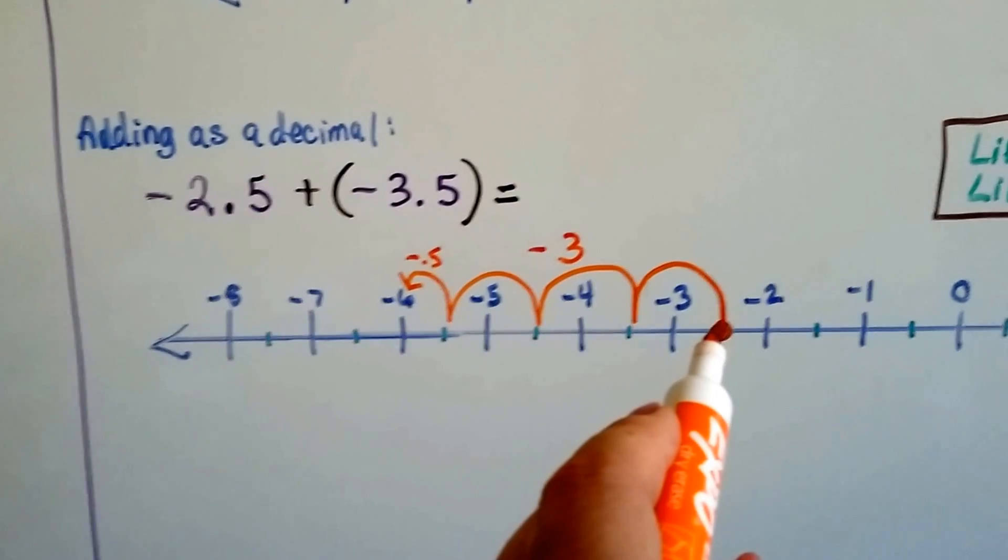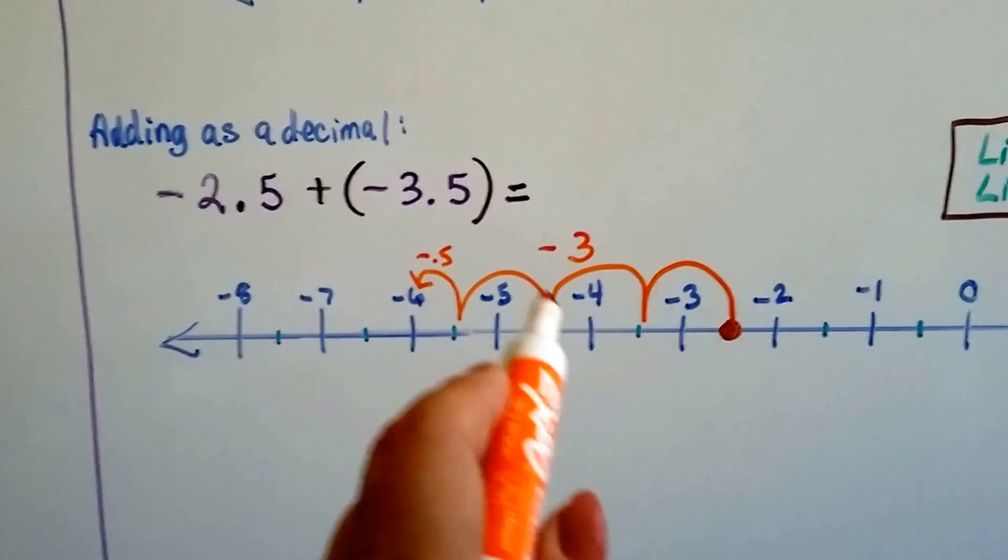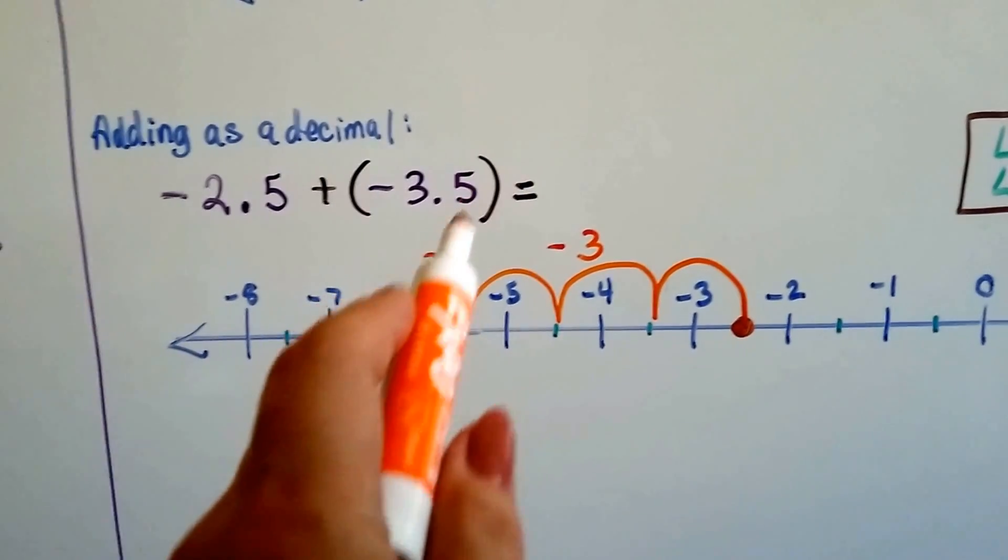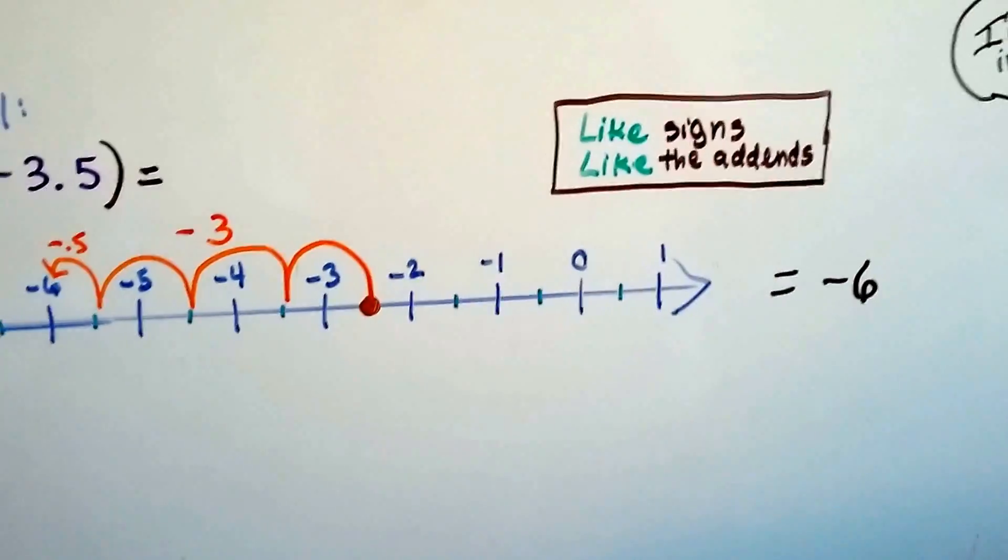So to add a negative 3.5, since we're at the halves, we're going to jump to 3 and a half, 4 and a half, 5 and a half. And then we're going to add that other little 0.5 right here, and it's going to put us at negative 6. So our answer is negative 6.